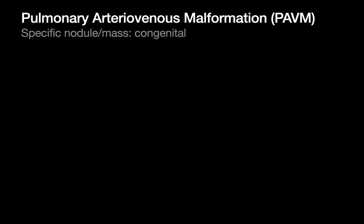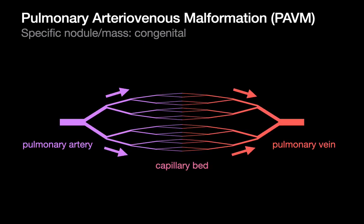Starting with the congenital ones: pulmonary AVMs, infected pulmonary sequestrations, and infected type 2 CPAMs can sometimes present specifically, and we need to be prepared for them. Let's talk about pulmonary AVMs first. In the lungs, we have pulmonary arteries that eventually become smaller and smaller arterioles and eventually reach and feed a capillary bed.